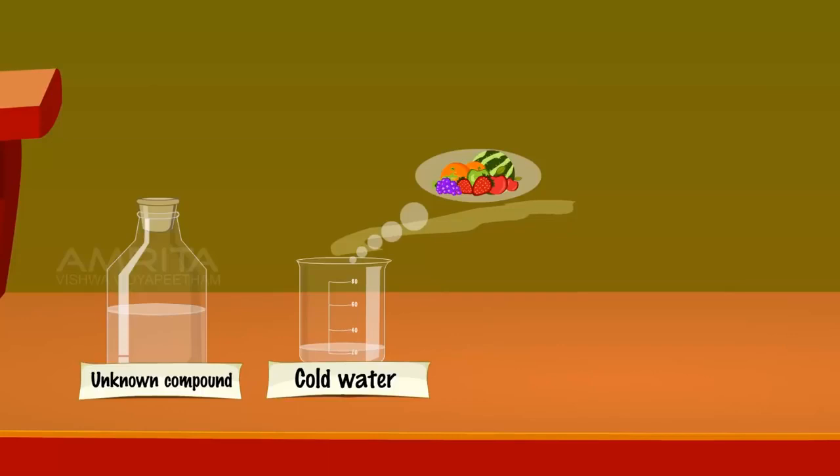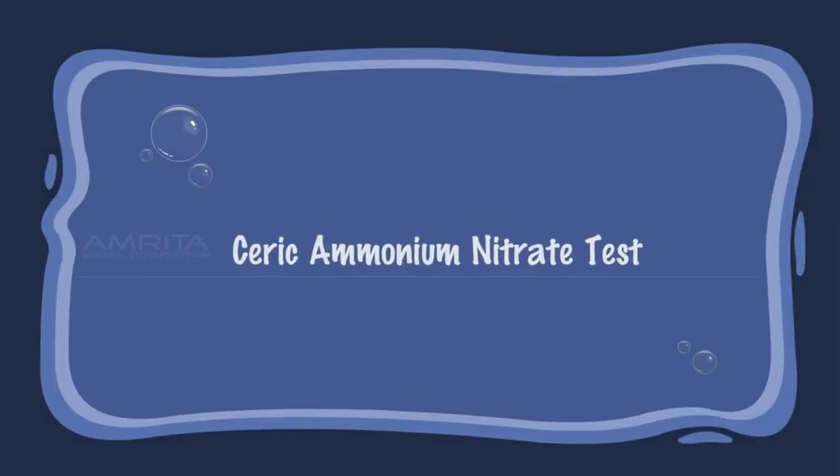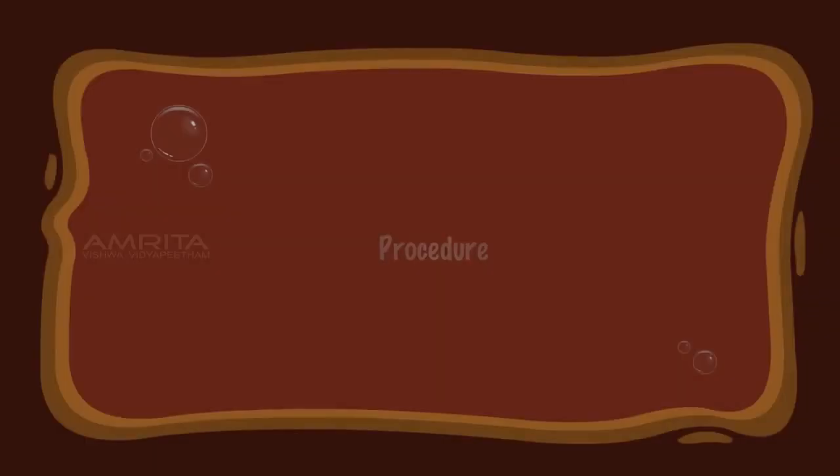Alcohol reacts with carboxylic acid in the presence of concentrated sulphuric acid to form a fruity-smelling compound called esters. A fruity smell indicates the presence of an alcoholic group. Seric ammonium nitrate test.